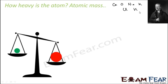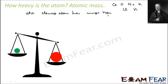Let's see how heavy an atom is. Dalton's Atomic Theory clearly stated that each element's atom has a unique mass — some are heavy, some are light. For example, oxygen is heavy and hydrogen is light. This atomic theory could explain the law of constant proportion.